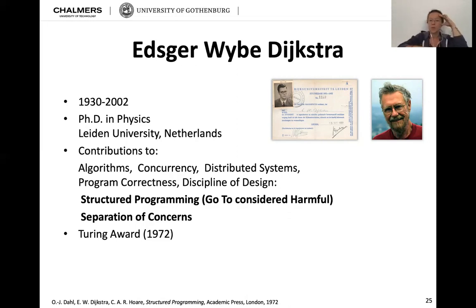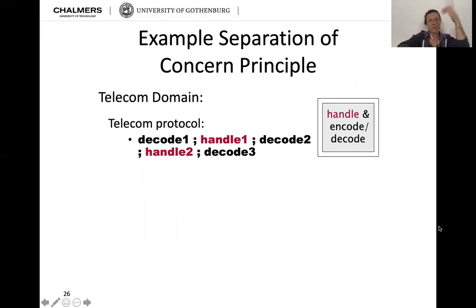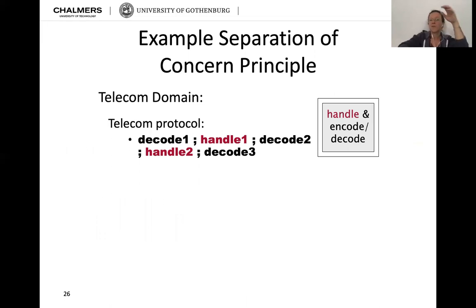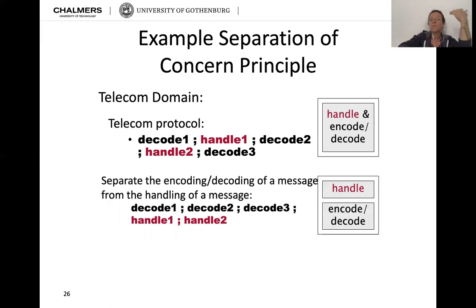Separation of concerns is one of the answers for how that can be structured better. Dijkstra also got a Turing Award in 1972 for his work. An example: in the telecom domain, if your protocol mixes decode, handle, decode, handle — having encoding/decoding and handling mixed can be improved. Separate the encoding and decoding of a message from the handling of a message. That way you have two separate modules, and if you need to change one, it's a whole lot easier. That's the real reason why we want to separate concerns — it makes it easier to update and evolve the system.